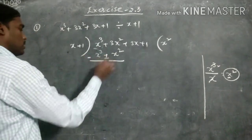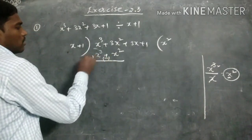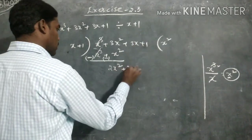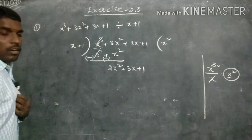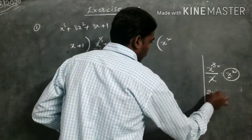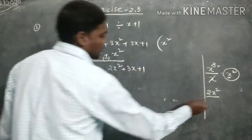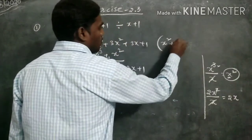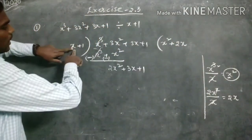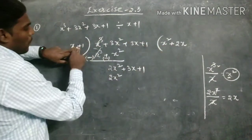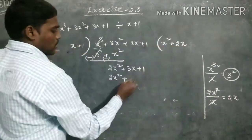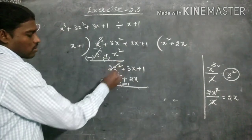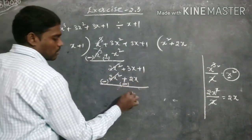Now do the subtraction — it is minus, and it is also minus. This gives us 3x² minus x² which equals 2x². The remaining terms come down as 3x plus 1. The first term is 2x². The x cancels, giving us 2x as the next quotient term. Then 2x multiplied by the divisor gives 2x² plus 2x, and 3x minus 2x equals x.